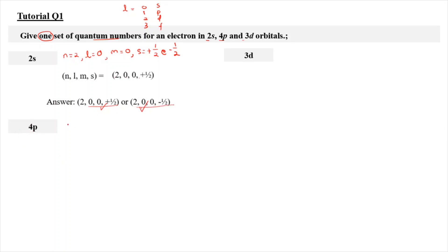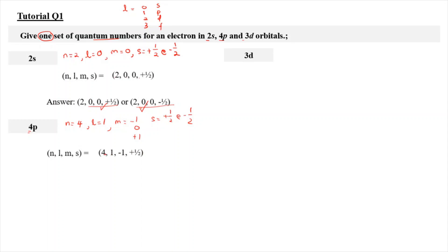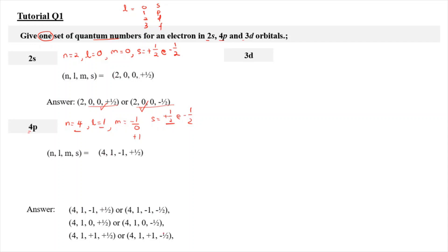For 4p, we know that n is equal to 4 because the energy level is 4. Then l is equal to 1, because it refers to p. When l is equal to 1, we have three possible options for m: negative 1, 0, and plus 1. And for s, we have positive half or negative half for each case. So I will choose n, l, m, s equal to 4, 1, negative 1, and plus half. If your answer is within any of those possible combinations, then you are correct.